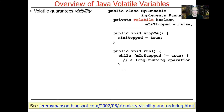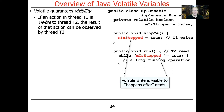Volatile also guarantees visibility. Here's a little program where we have a Boolean flag called mIsStopped defined as volatile. As a consequence, whenever mIsStopped is set to true, the next time the loop in thread T2 runs, it will detect that and stop — properly shutting down the thread. This ensures the write from thread T1 in the stopMe method to mIsStopped is propagated promptly to the following read in thread T2 when it checks the loop condition.